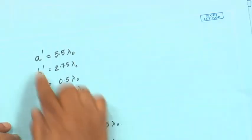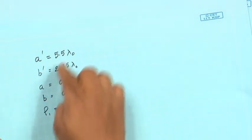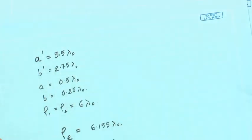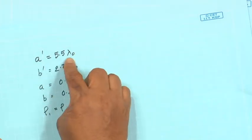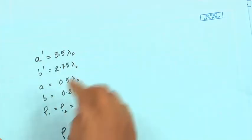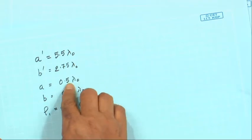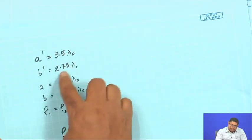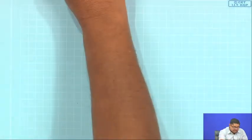I said that typically we use up to 10λ for the flares. Here it is 5.5 and it is — how much is it — yes, it is 5.5λ₀ and 2.75λ₀. So there will be some gain. Let us find out the gain.